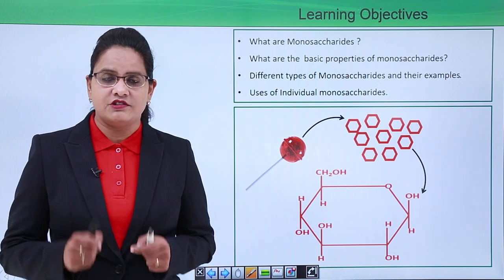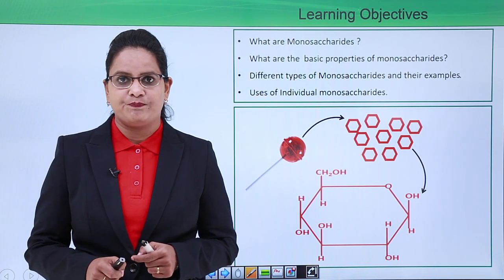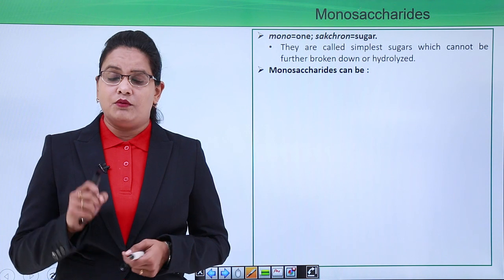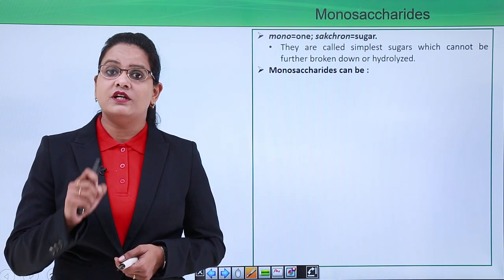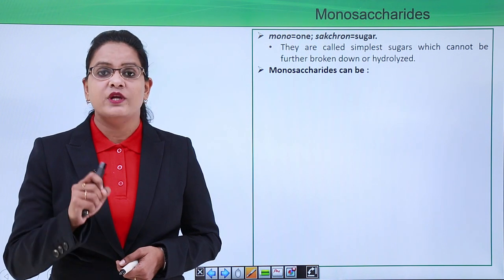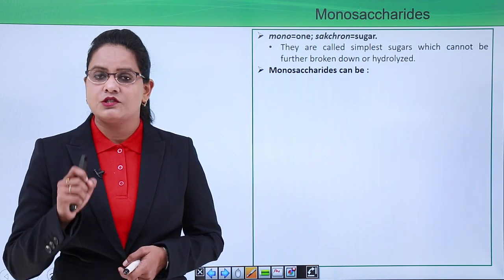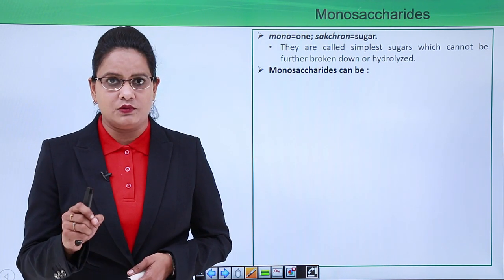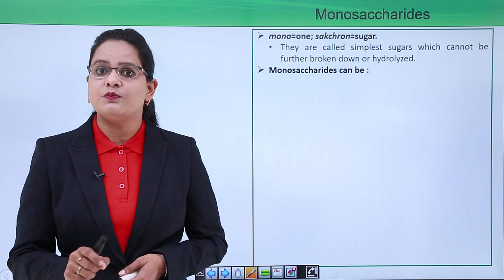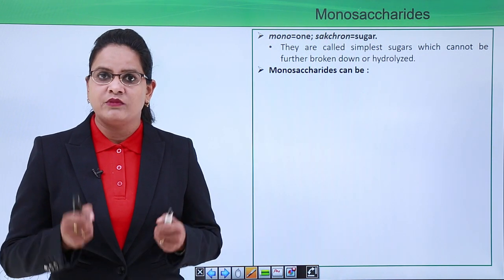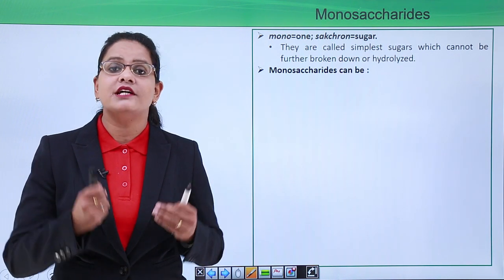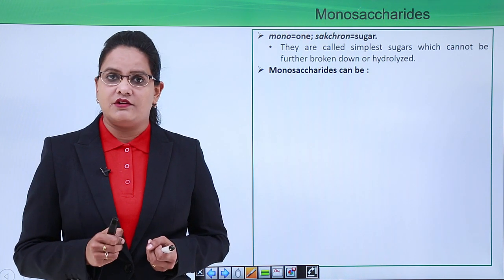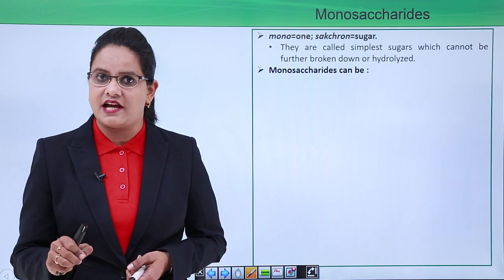And we will also learn the uses of different types of monosaccharides. First, what are monosaccharides? 'Mono' means one, and the word 'saccharine' comes from Greek which means sweet or sugar — so single sugar. Monosaccharides are the simplest sugar molecules; they cannot be broken down into simpler substances, making them the smallest unit which joins together to form larger carbohydrates.